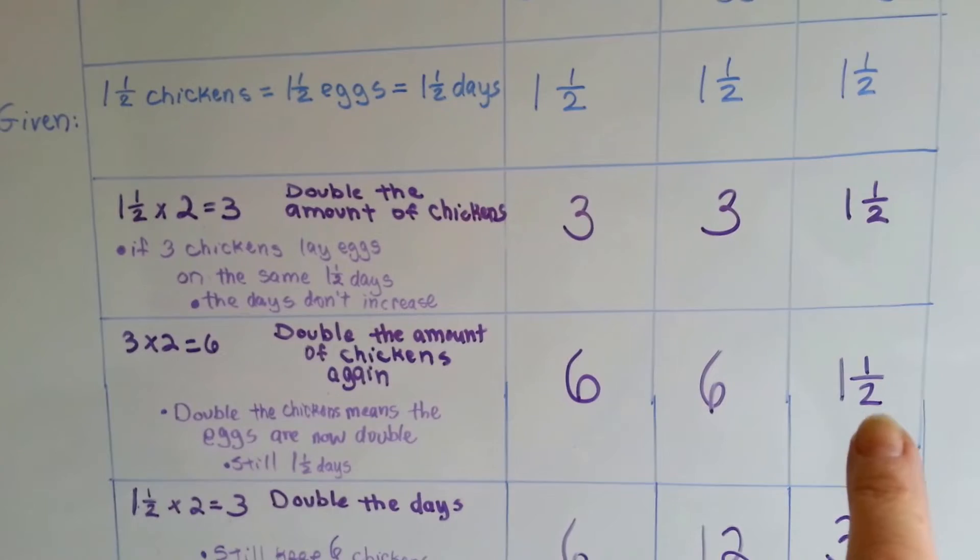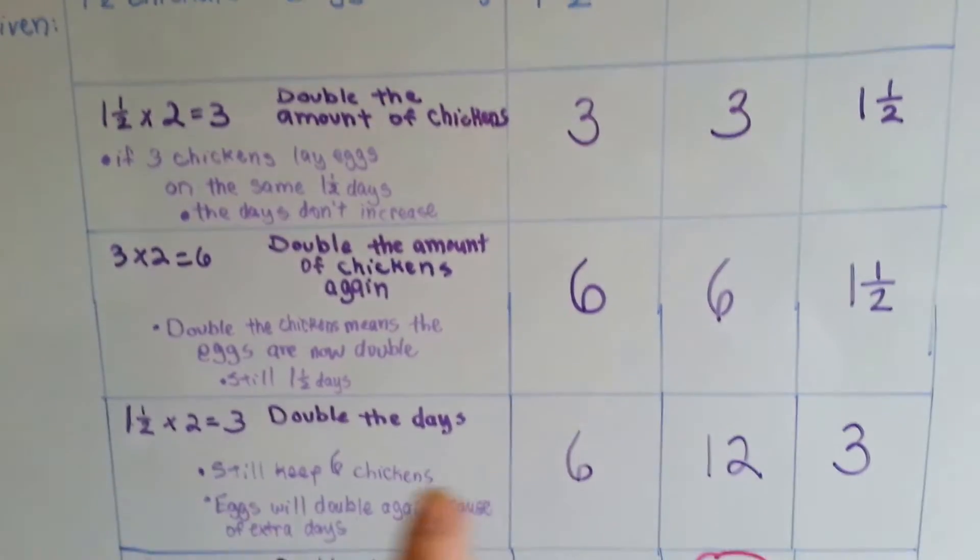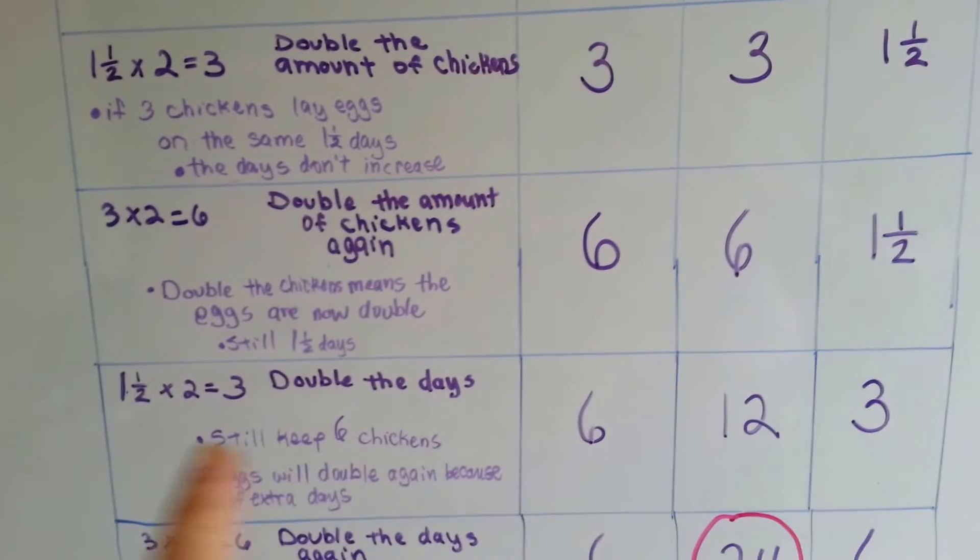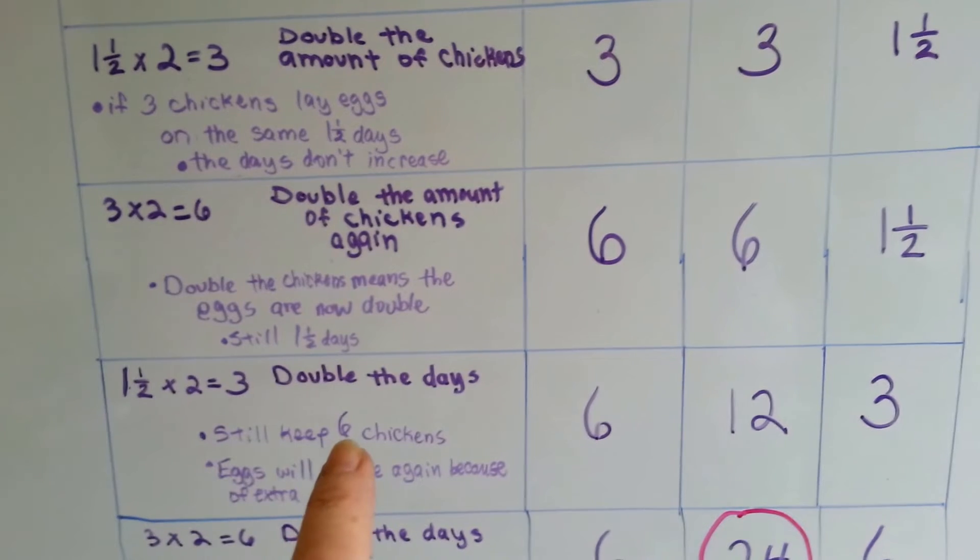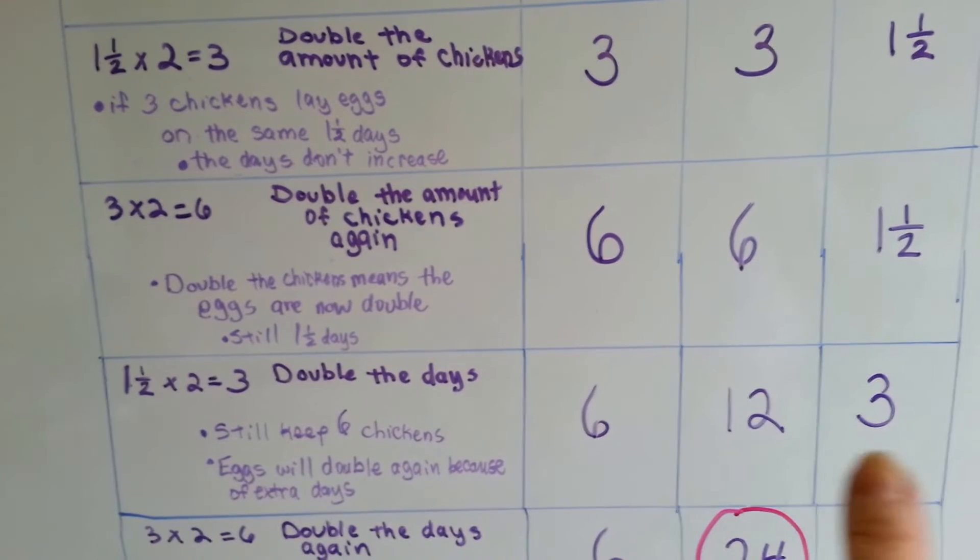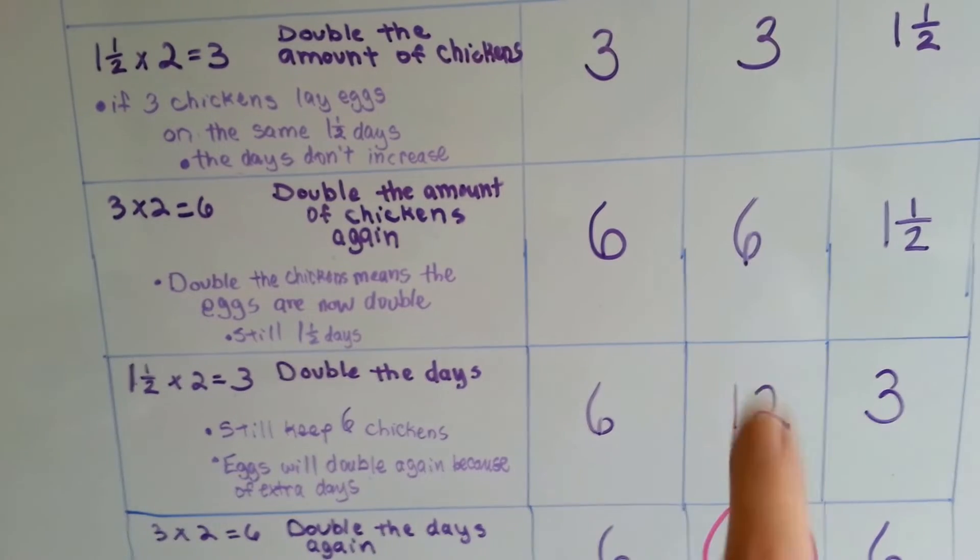We need to get to six days. So now we've doubled the chickens and then doubled them again. Now we're going to double the days. So the amount of chickens are going to stay the same. We're keeping the six chickens. But because we doubled the days, the amount of eggs are going to double.